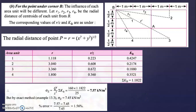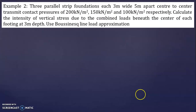New example: Three parallel strip foundations, each 3 meters wide, 5 meters apart center to center, transmit contact pressures of 200 kN/m², 150 kN/m², and 100 kN/m² respectively. Calculate the intensity of vertical stress due to the combined loads beneath the center of each footing at 3 meter depth.